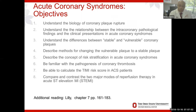Number four: how do we change that vulnerable plaque that's prone to rupture? How do we calm it down, so to speak, and change it to a stable plaque? Number five: describe the concept of risk stratification. Number six: be familiar with the pathogenesis of thrombosis, the formation of blood clot in the coronary artery.